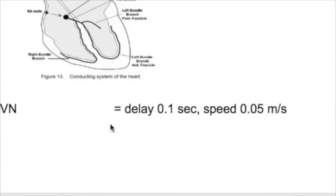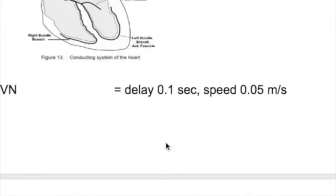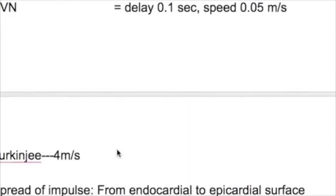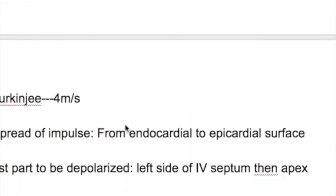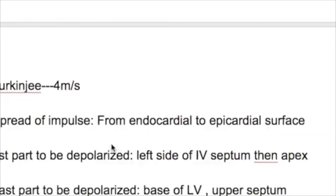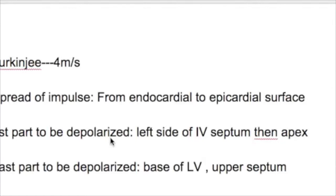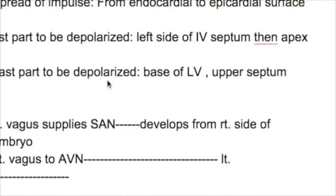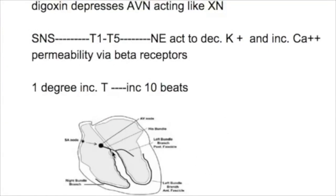The speed of conduction is fastest in the Purkinje tissue at 4 meters per second, so there is a difference of about 80-fold between the AV node and Purkinje tissue. The impulse spreads from the endocardial to the epicardial surface. The first part to be depolarized is the left side of the interventricular septum, then the apex. The last part depolarized is the base of the left ventricle and upper part of the septum.